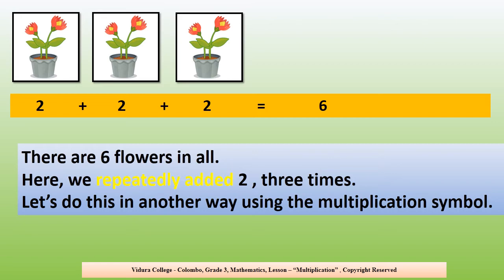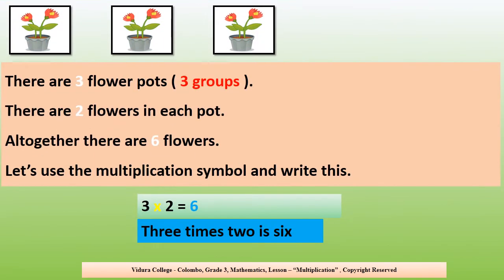Here we repeatedly added 2 three times. Let's do this in another way using the multiplication symbol. There are 3 flower pots or 3 groups. There are 2 flowers in each pot. Altogether there are 6 flowers. Let's use the multiplication symbol and write this.